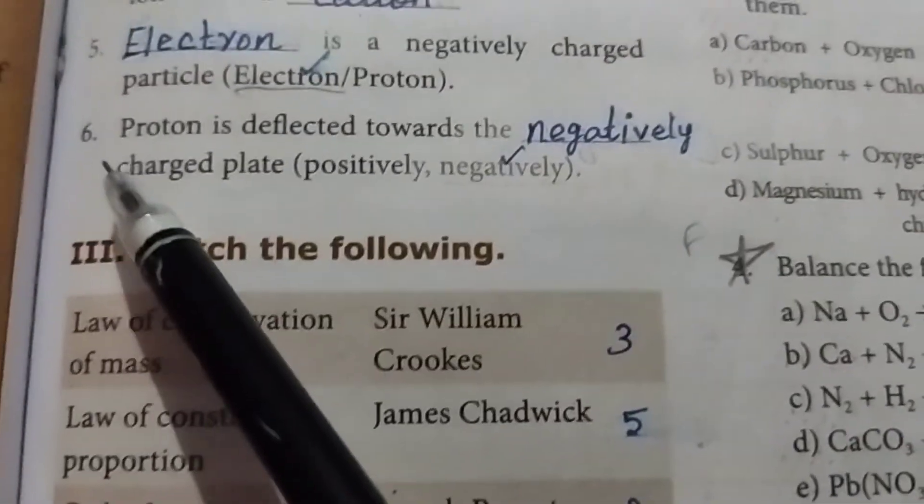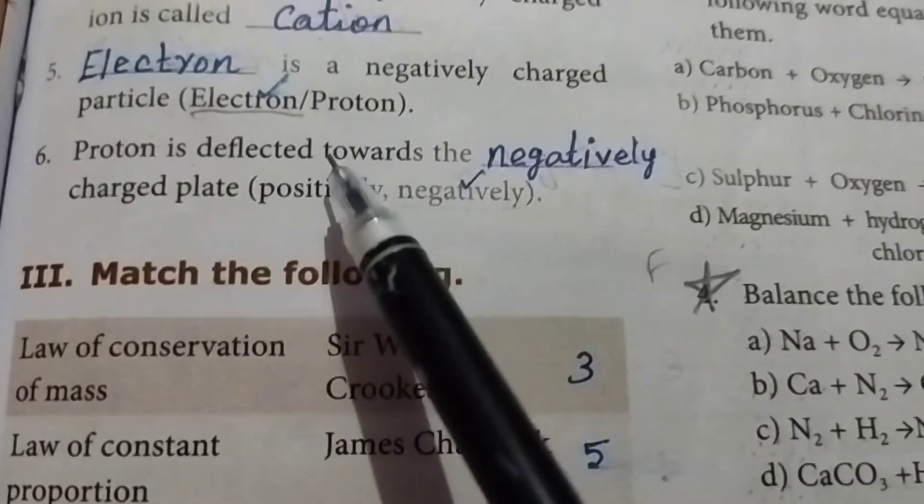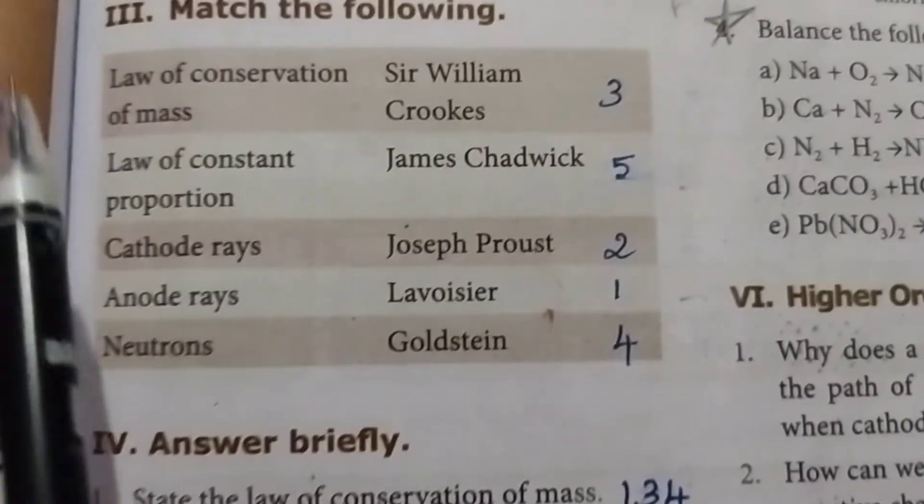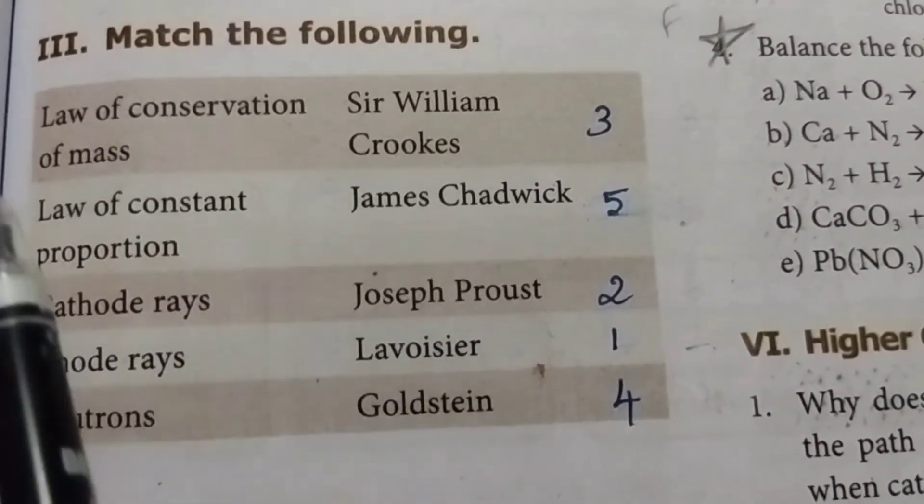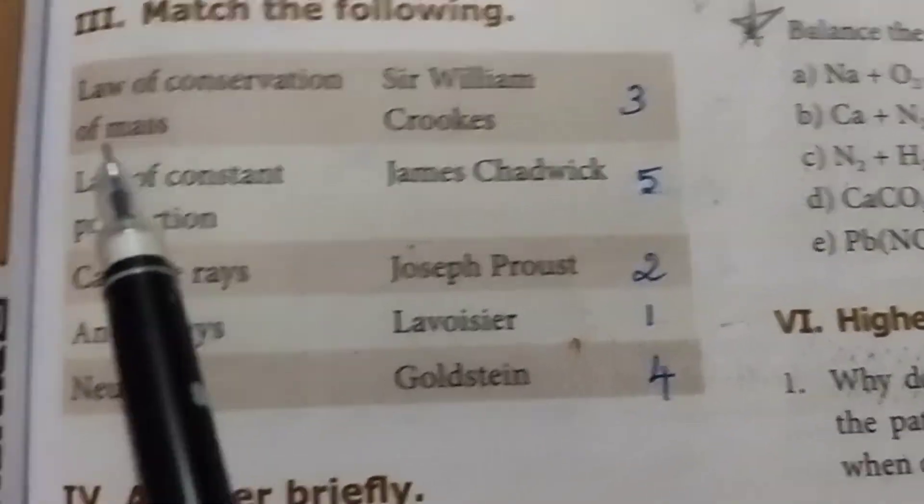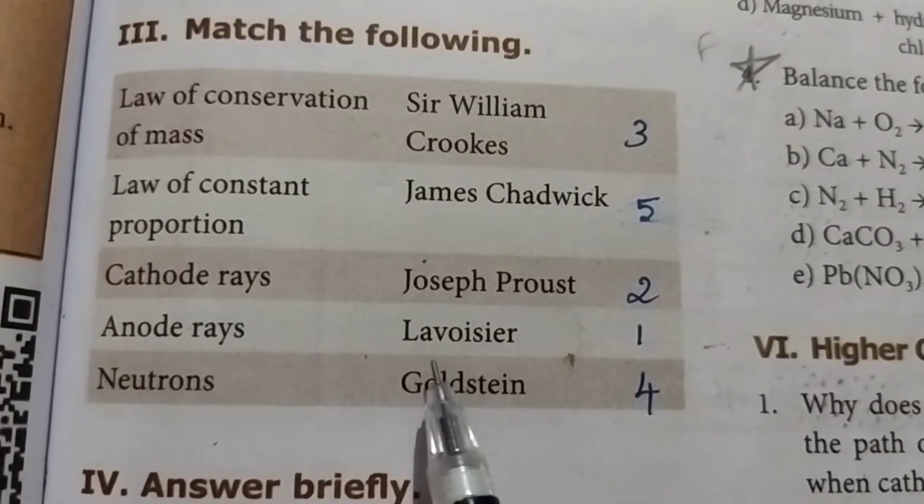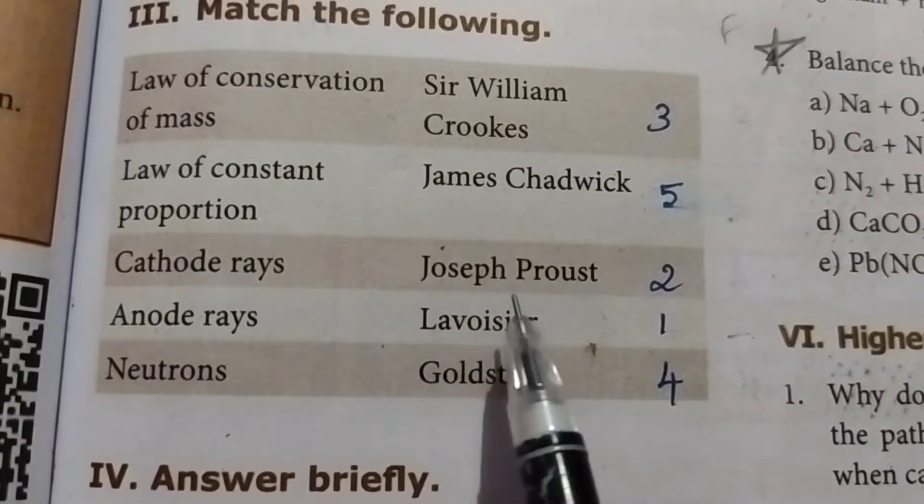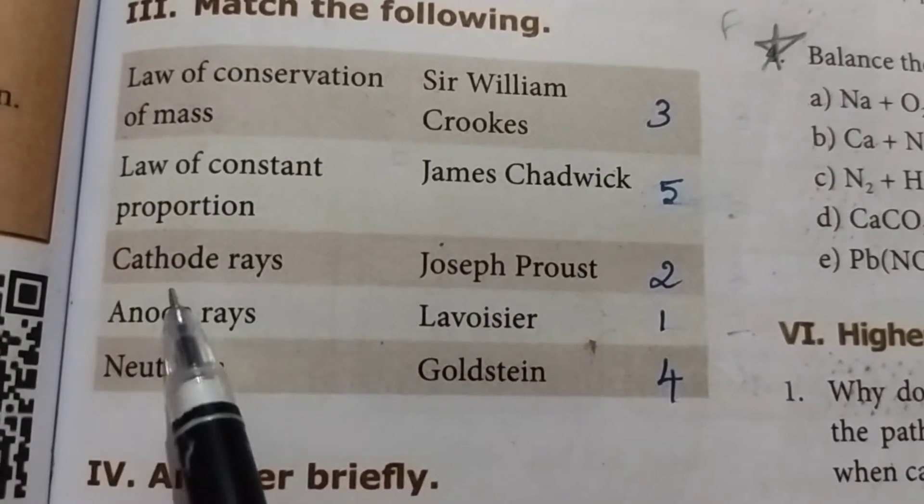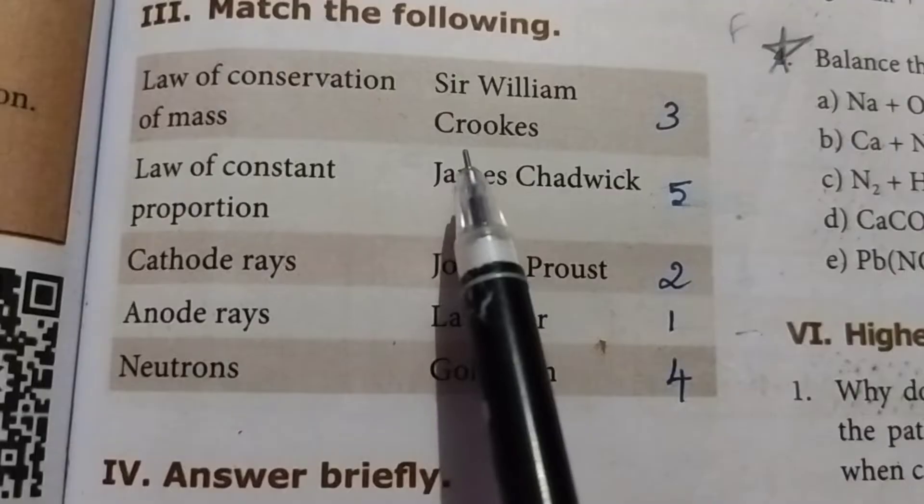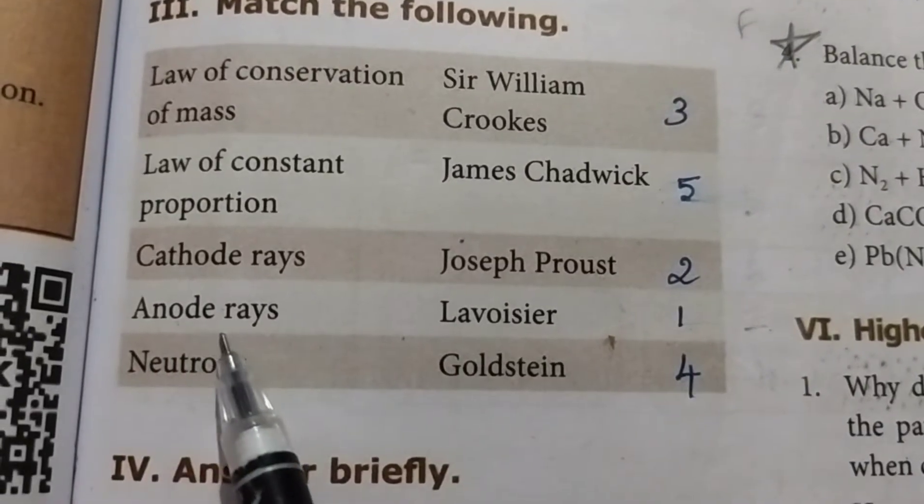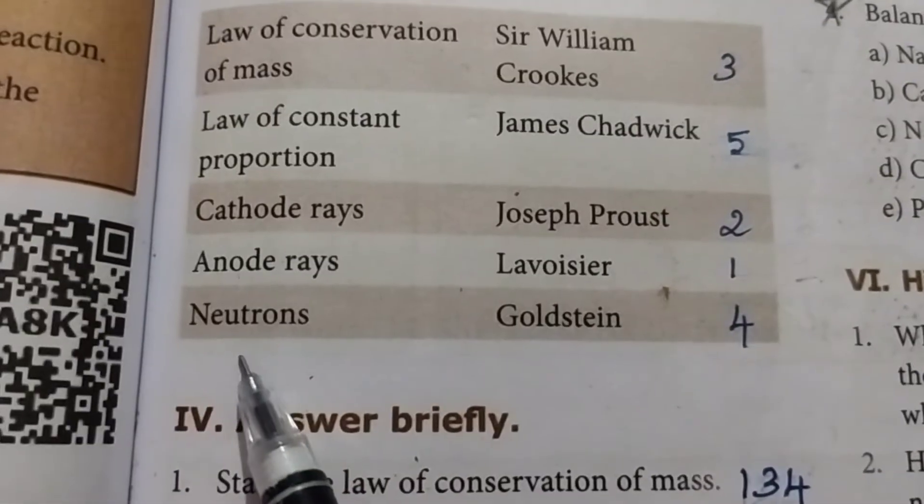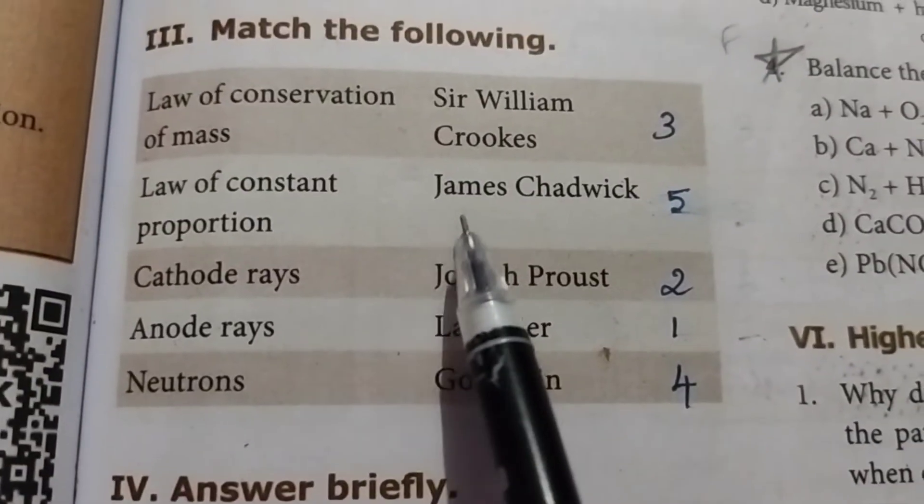Fifth one: electron. Sixth one: proton is deflected toward the negatively charged plate. Then third Roman letter, match the following: law of conservation of mass - Lavoisier, law of constant proportion - Joseph Proust, cathode rays - Sir William Crookes, anode rays - Goldstein, neutrons - James Chadwick.